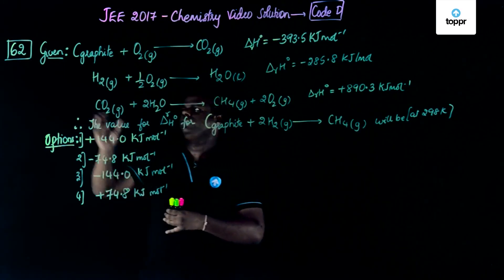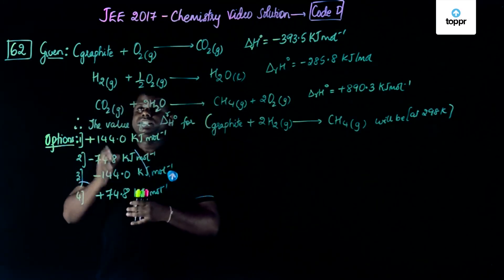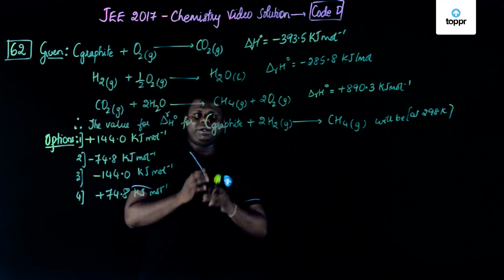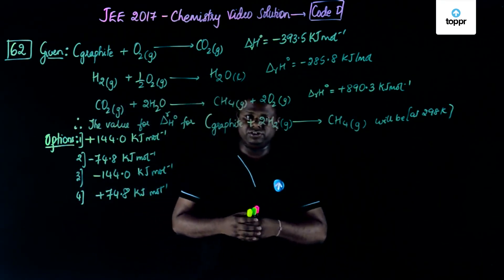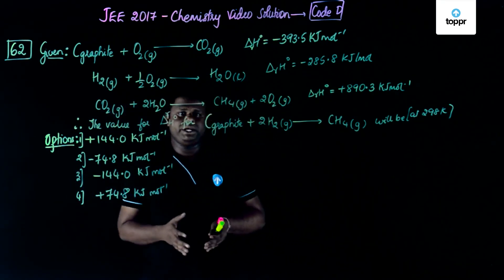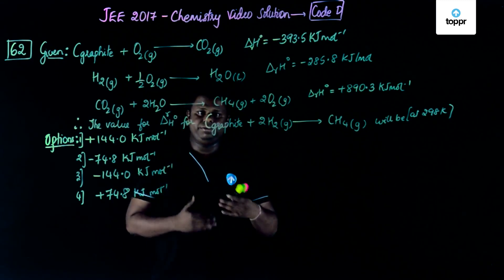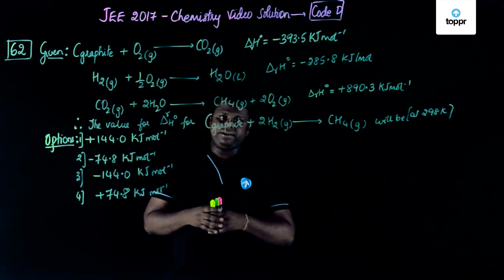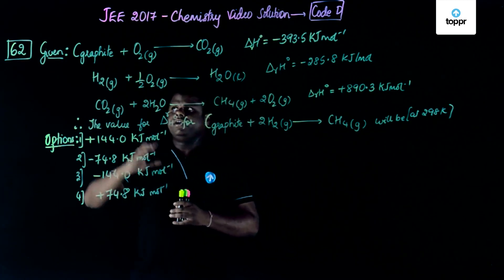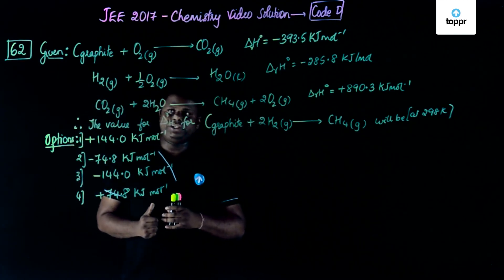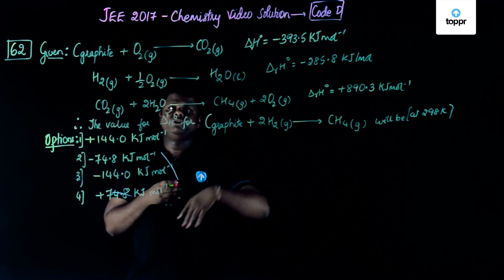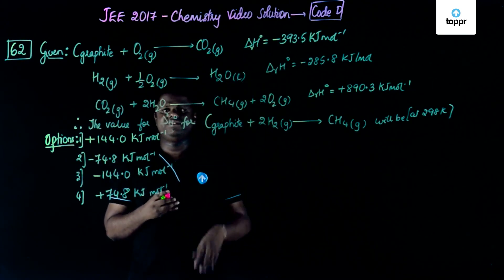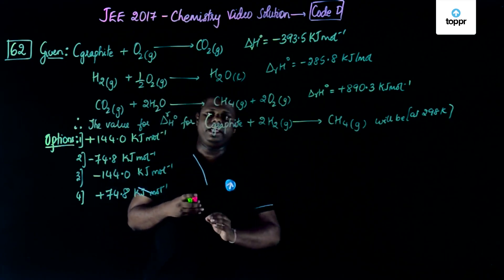Now, let's move on to question number 62. This question is related to thermodynamics, specifically from the thermochemistry section. You might know about thermochemical equations which can be treated like algebraic equations - they can be added, subtracted, or divided. These are the characteristics we're going to use for solving this question. You've been given some thermochemical equations and their standard heat of reaction at 298 Kelvin.